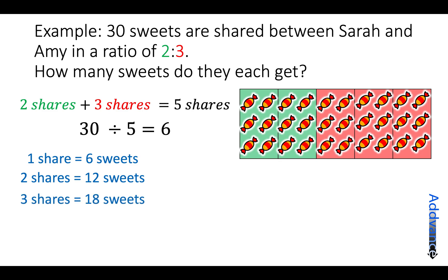And then to find 3 shares, we multiply by 3 and we get 18 sweets. We can see a picture of this over here. Sarah is in green and Amy is in red. That's how many sweets they each get. So the final answer says that Sarah gets 12 sweets and Amy gets 18 sweets.